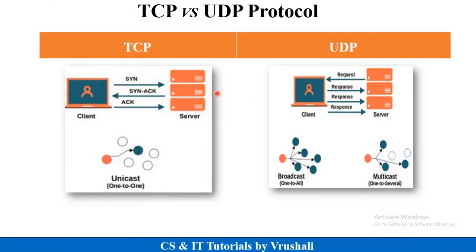Now, looking at this diagram — in TCP, the client first establishes a connection with the server, and when the server receives a packet, it sends an acknowledgement. It is a one-to-one point communication. In UDP, there is no connection establishment between client and server. Data is broadcast across the network, and there is no acknowledgement exchanged between client and server.